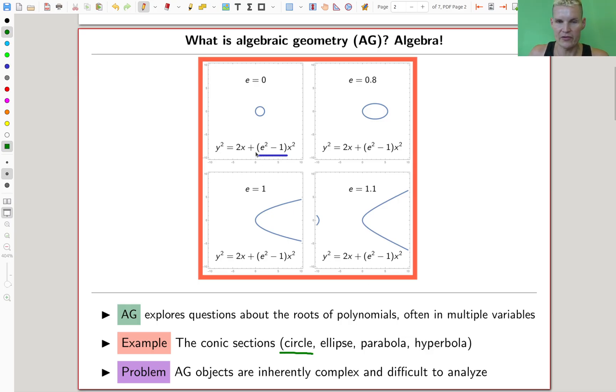So these are kind of the standard examples. Circle is this guy, ellipse is this person here, the parabola is this mate here, and the hyperbola is my best friend down here in green. So the conic sections are kind of standard examples of algebraic geometry.